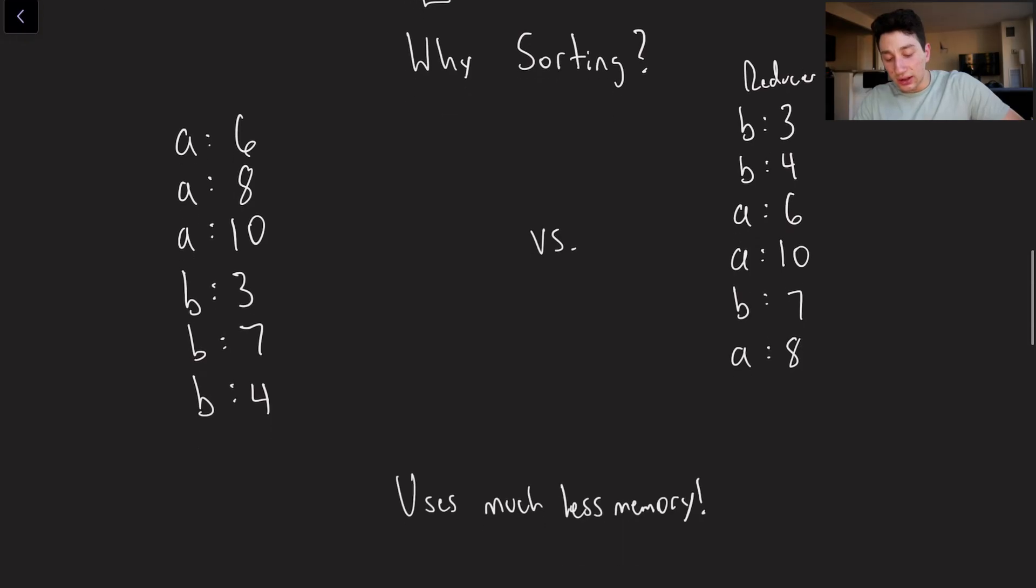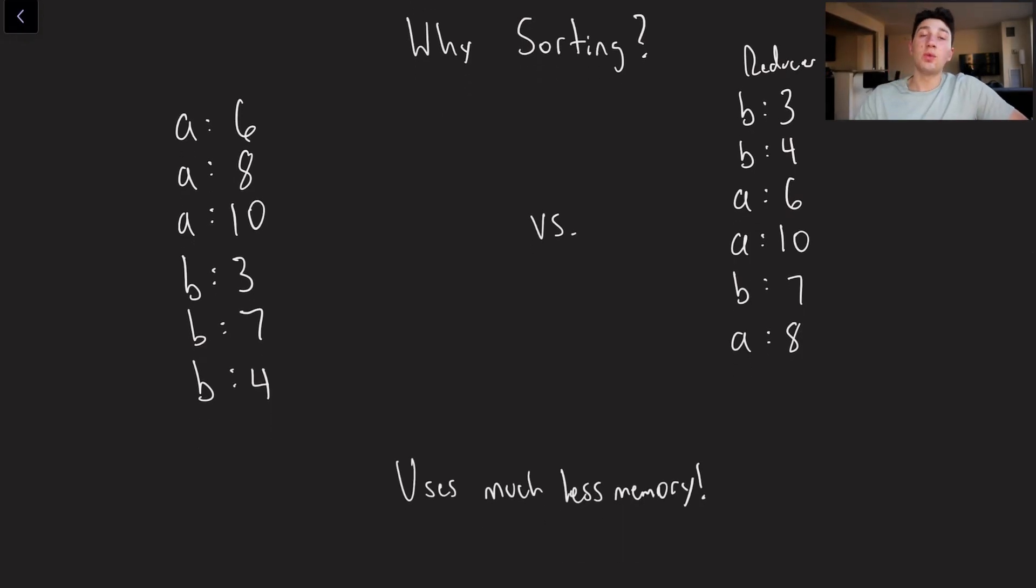So again, I keep mentioning that we were doing some sorting because we want our data on our reducer to be sorted. So keep in mind, this guy is the reducer right here. So let's explain why we actually want that. Let's imagine that this is my reducer and the reduction function that I want to do is perform the sum of the values for each key.